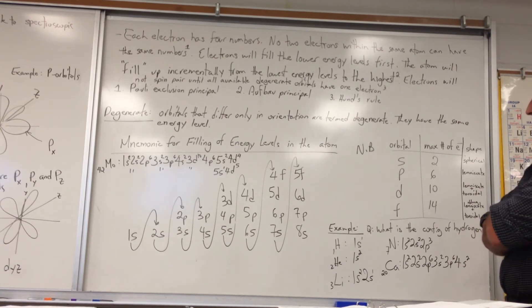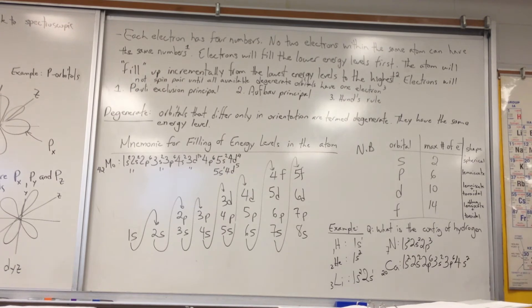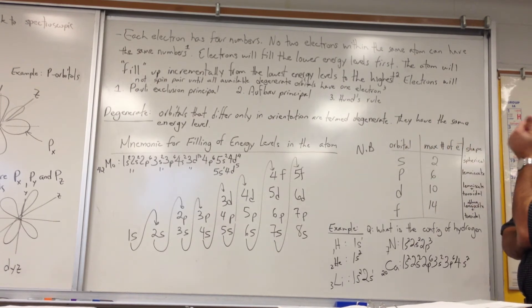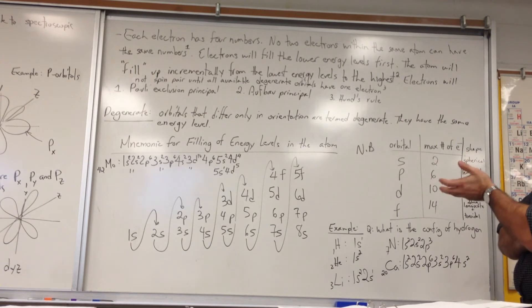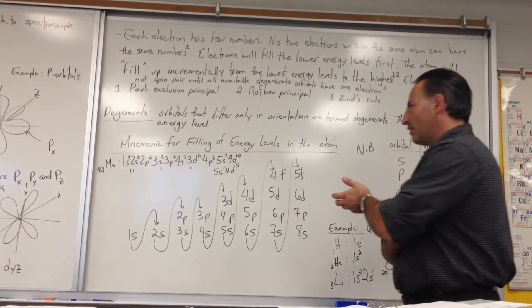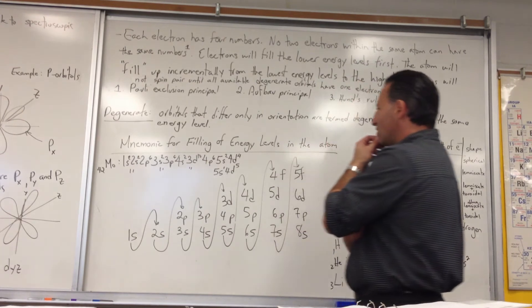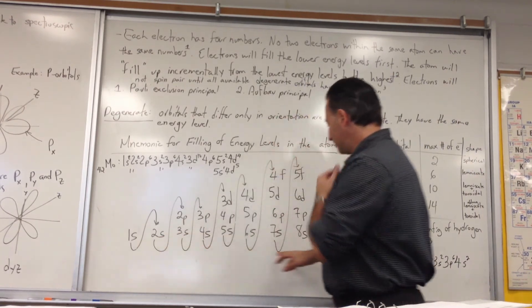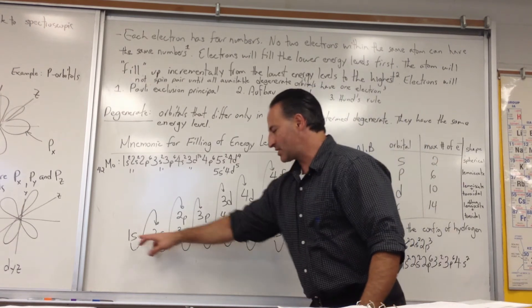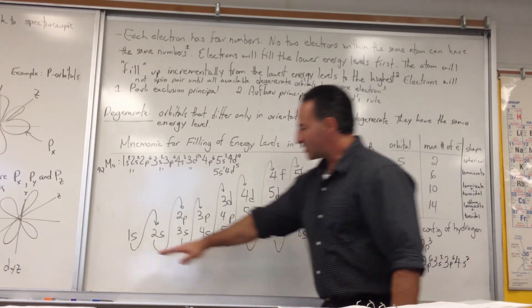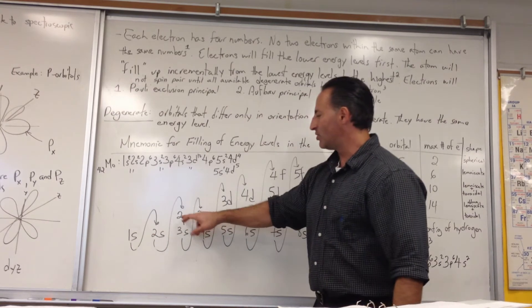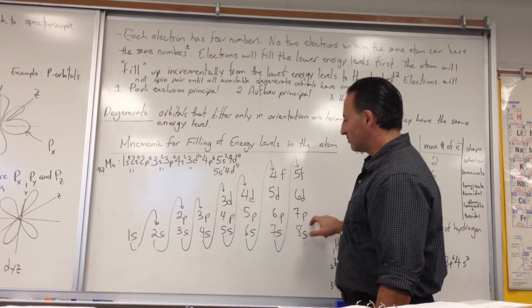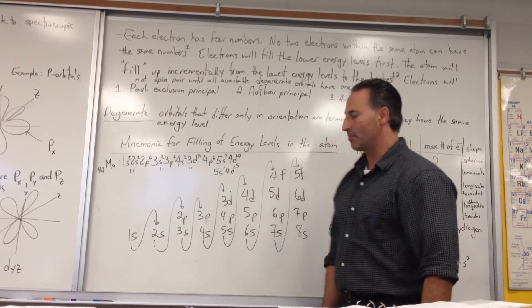The next thing we're going to look at is how to fill in the electron shells that result from the combination of these four numbers. I made a mnemonic for filling the energy levels in the atom. What you do is you draw the numbers one through eight, and you put an S next to each one.